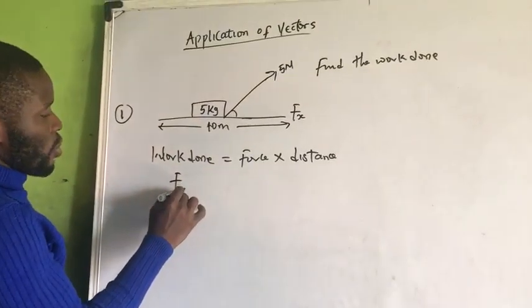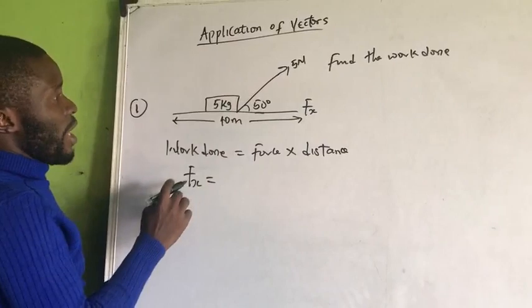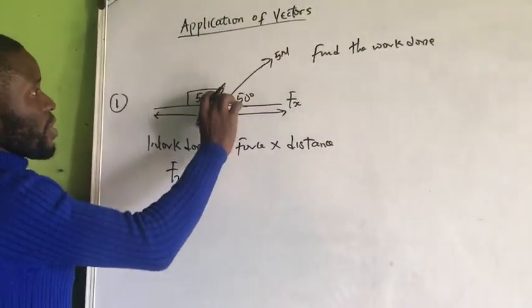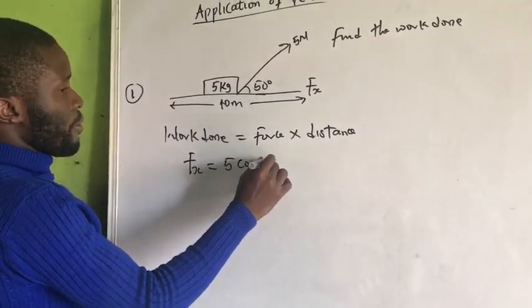So, now, what is f sub x? That would be, now, let's say this is 50 degrees. F sub x would be, since this is inclined to the vertical, to the horizontal, that would be 5 cos 50 degrees.